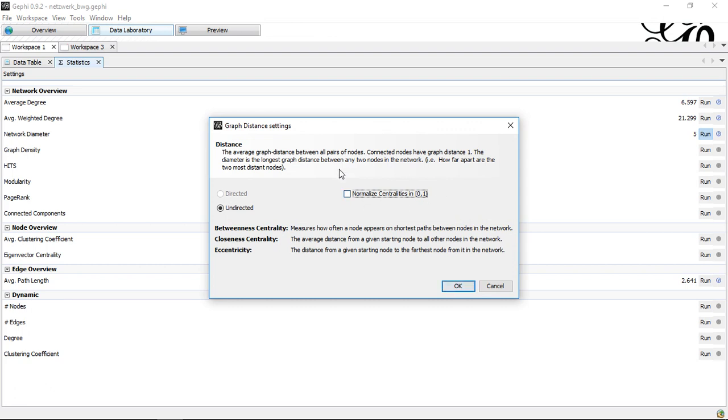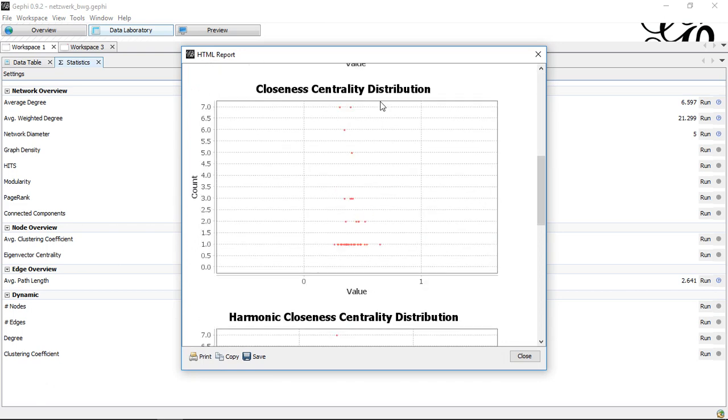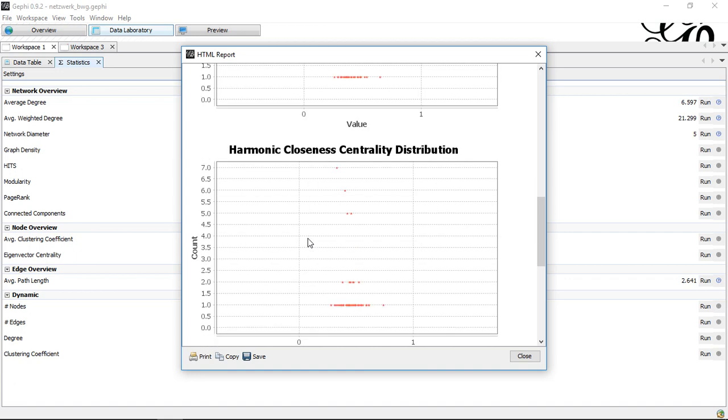we could use normalized statistics, which for the closeness as well as for the betweenness do not normalize the centrality values. So I would always keep it as is. Click OK. Then the second value you get here are the centrality values, including a harmonic version which is only slightly different.